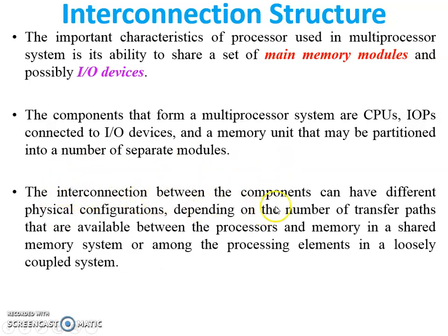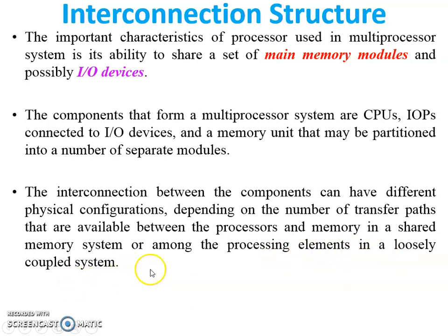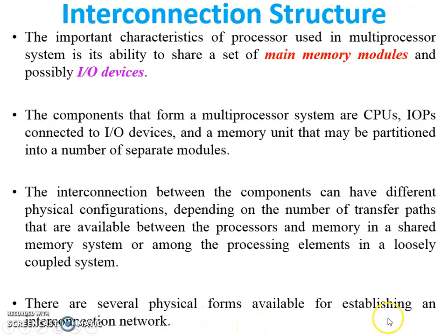The interconnection between components is required in all computer systems. It can have different physical configurations depending on the number of transfer paths available between the processor and memory in a shared memory system, or among processing elements in a loosely coupled system. Interconnection structures are required in both types of multi-processor systems.